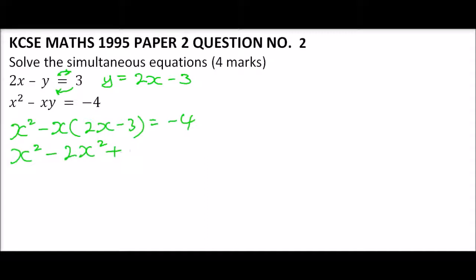We open the bracket: x squared minus 2x squared plus 3x equals minus 4. This will leave us with negative x squared plus 3x, then we bring 4 to this other side, it becomes positive, so we have plus 4 equals 0.